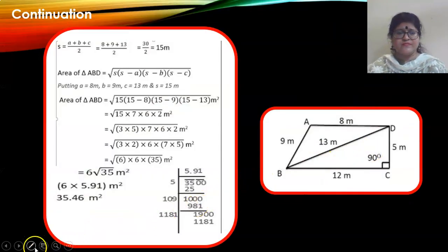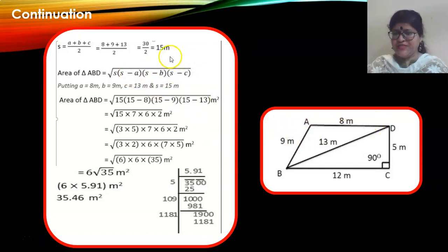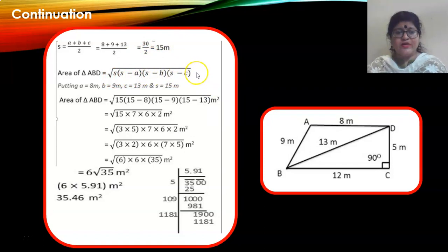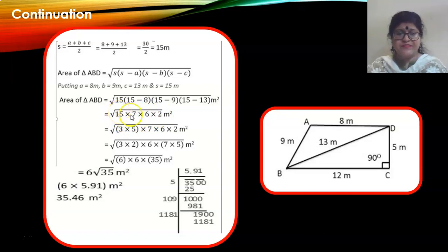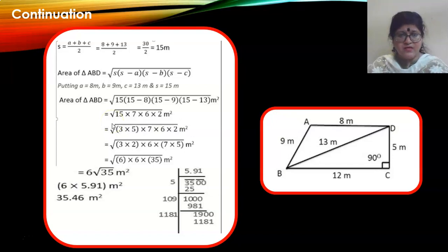After getting BD as 13 meters, we find the area of triangle ABD using Heron's formula because all three sides are known. The semi-perimeter S equals (9 + 8 + 13) / 2 = 15 meters. Substituting the value of the semi-perimeter into Heron's formula — with 15 × 7 × 6 × 2 — you get the area as 6√35. Try to calculate this on your own.